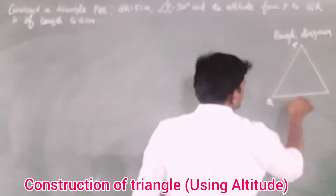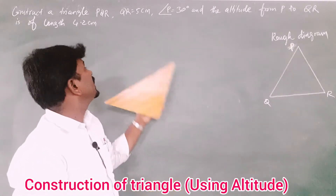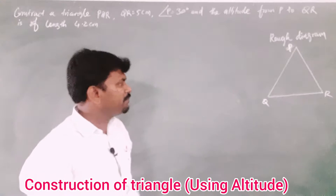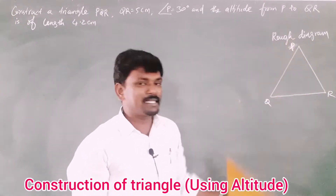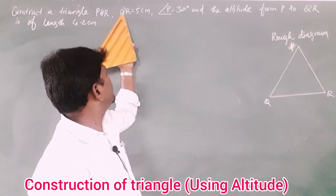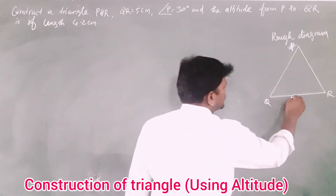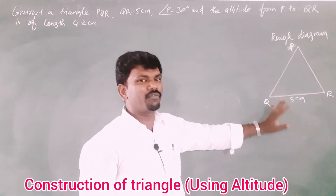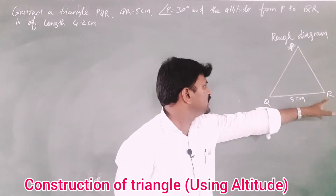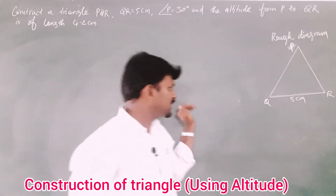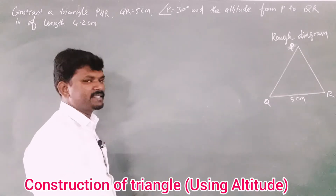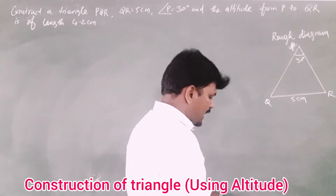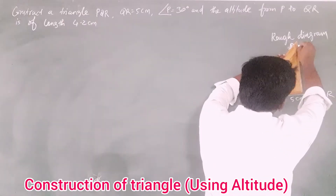The name of the triangle is PQR. I have taken P as the top vertex because the given base QR is equal to 5 centimeters. This will be familiar for us. Angle P is 30 degrees, and the altitude - the altitude is a perpendicular line.